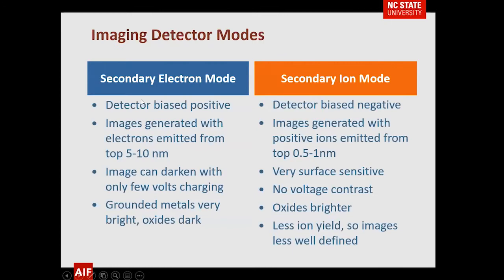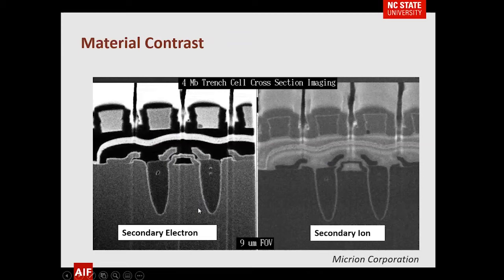If you have a detector where you can look at secondary ions — mainly by biasing the detector negative — most of the ions that come off are positive. For secondary electrons you bias positive to detect the electrons. Here's a cross-section of a semiconductor feature: in the secondary electron image there is a lot of black area from charging, but the secondary ion image clearly delineates a number of layers you can't pick up in the electron image. The combination of the two can be very useful.